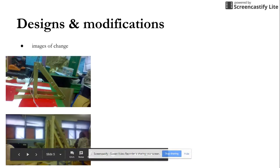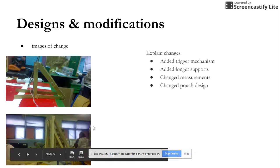Here was our first design made of cardboard that needed lots of work. The bottom picture is our final design without the sling. Some of our changes were we added a longer trigger mechanism, added longer supports, changed the measurements since the first one was a lot smaller than the final, and we changed the pouch design.